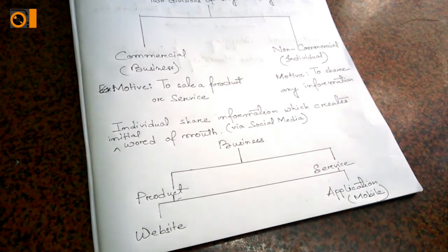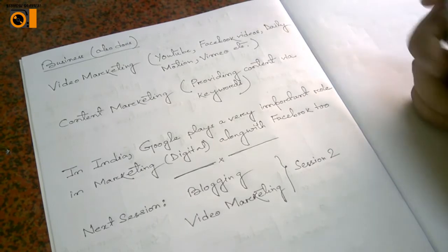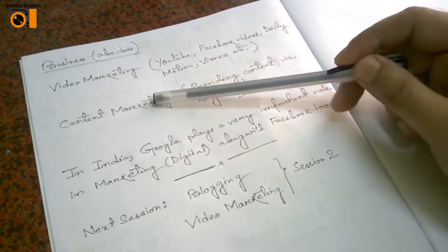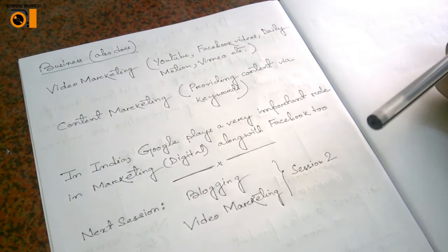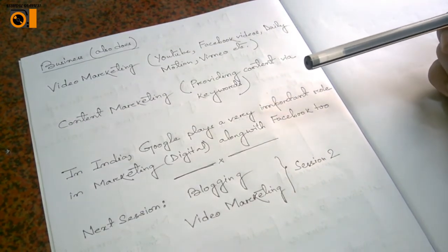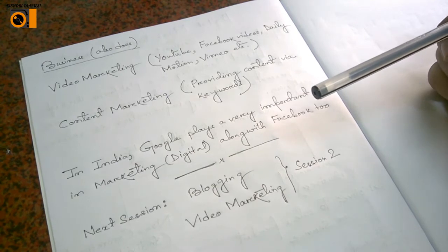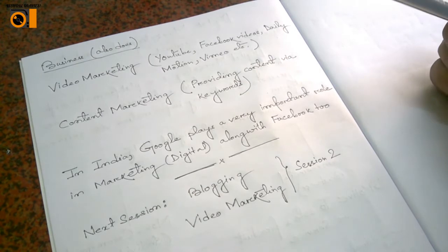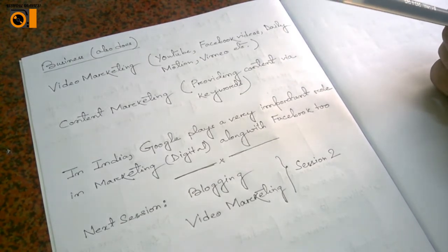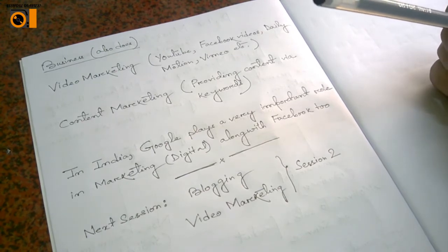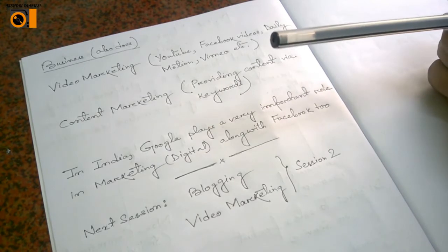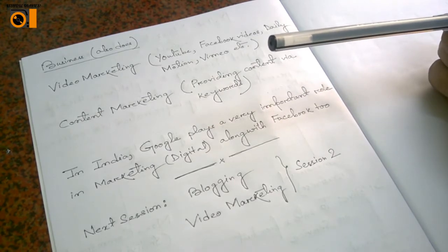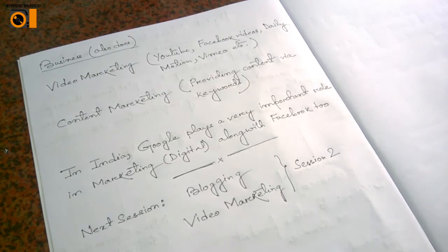Apart from that, businesses also do video marketing - YouTube, Facebook videos, Dailymotion, Vimeo. They come up to those platforms and promote their products and aware about their products via video marketing platform. And they do content marketing - providing content with keywords in their websites, the various articles they go through, they publish. So those are done via content marketing.